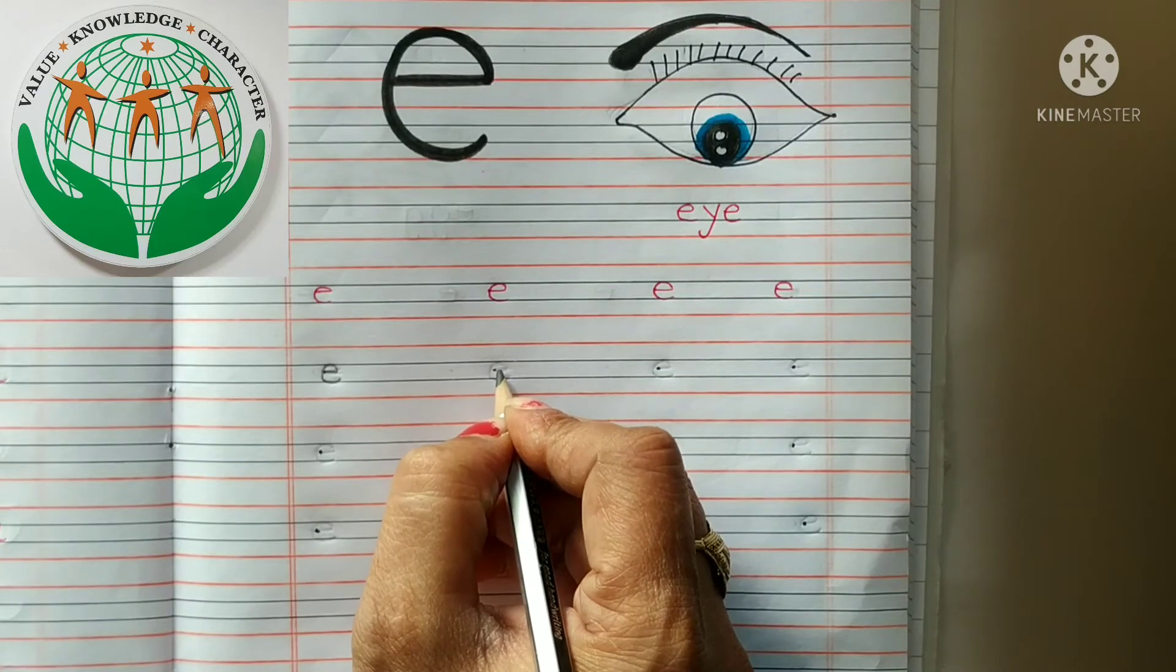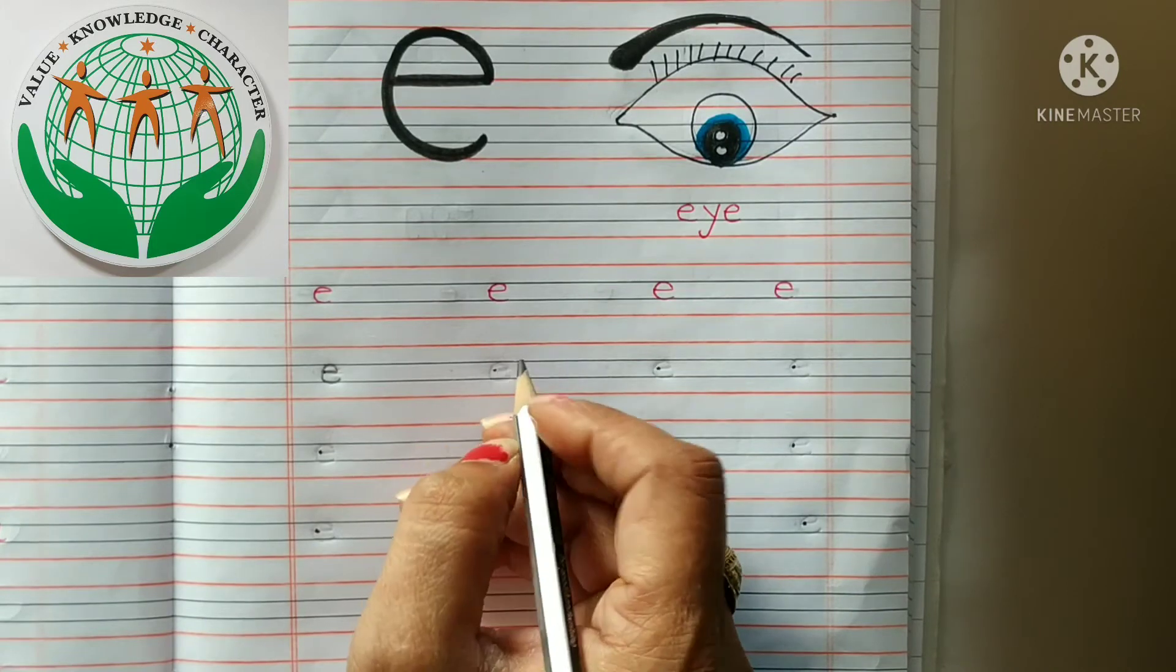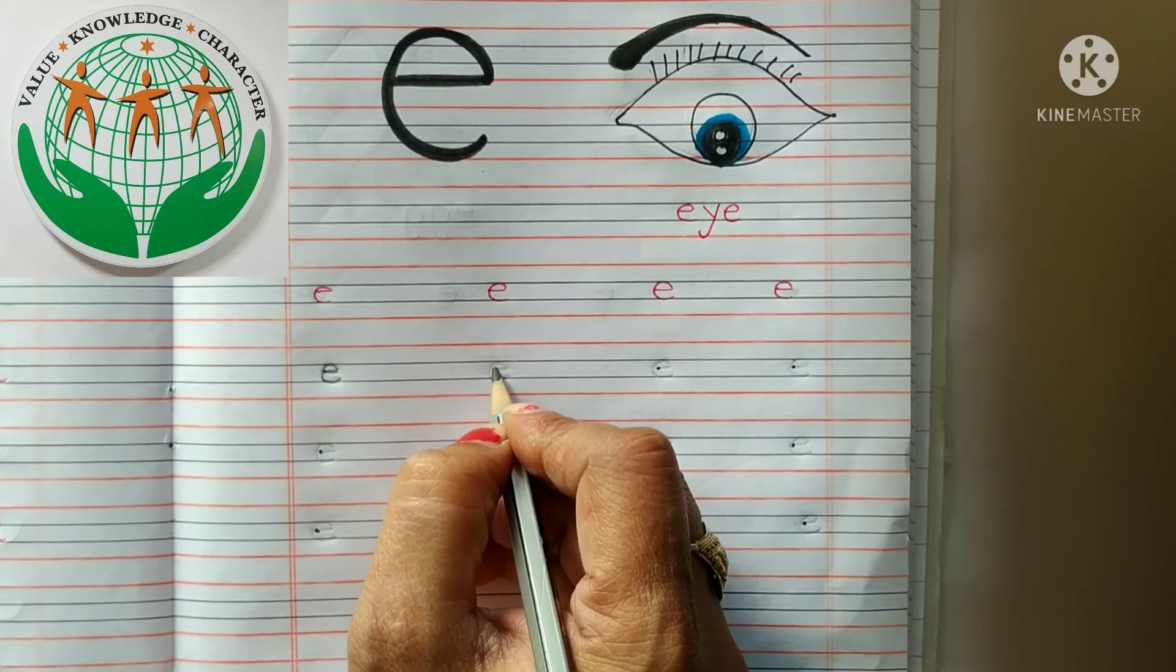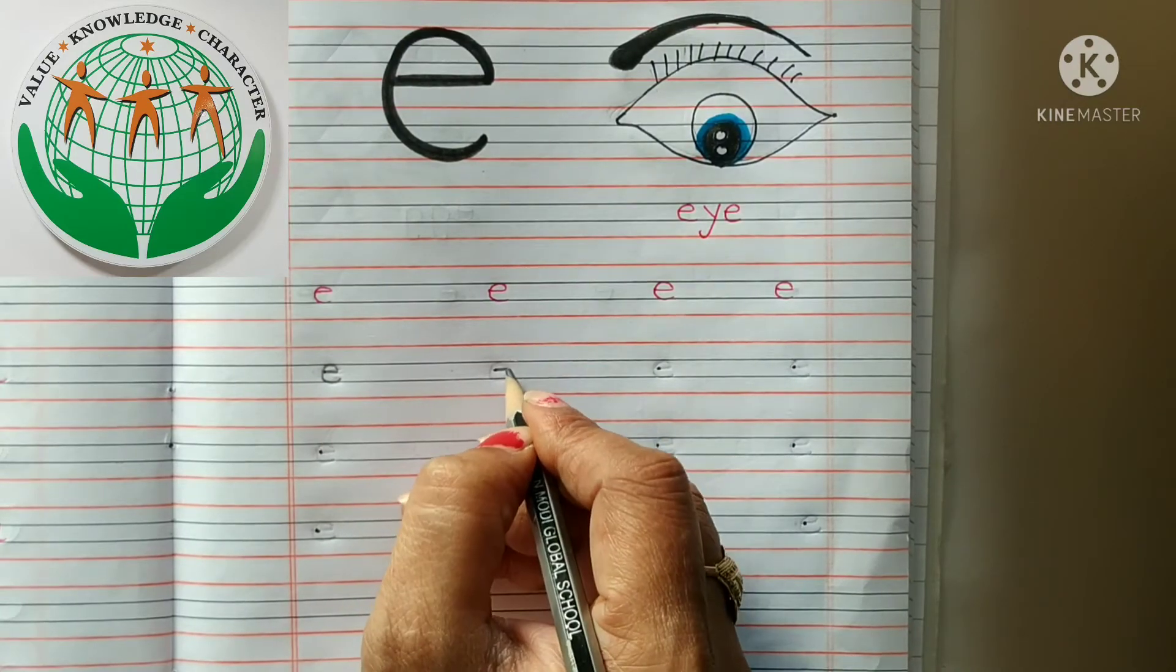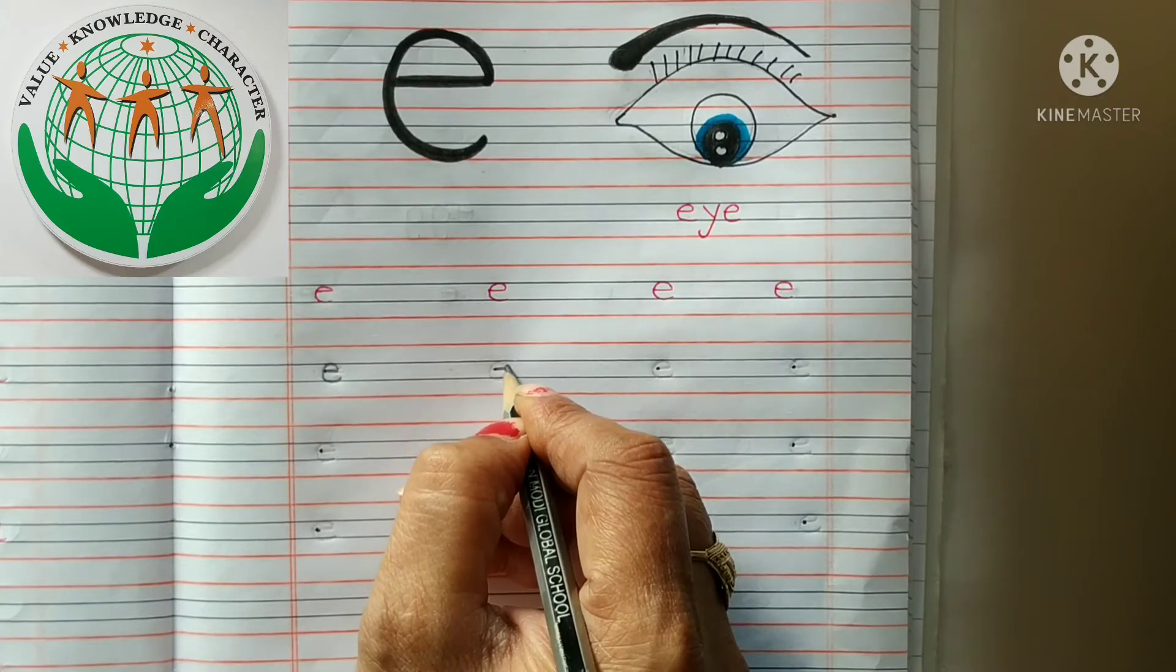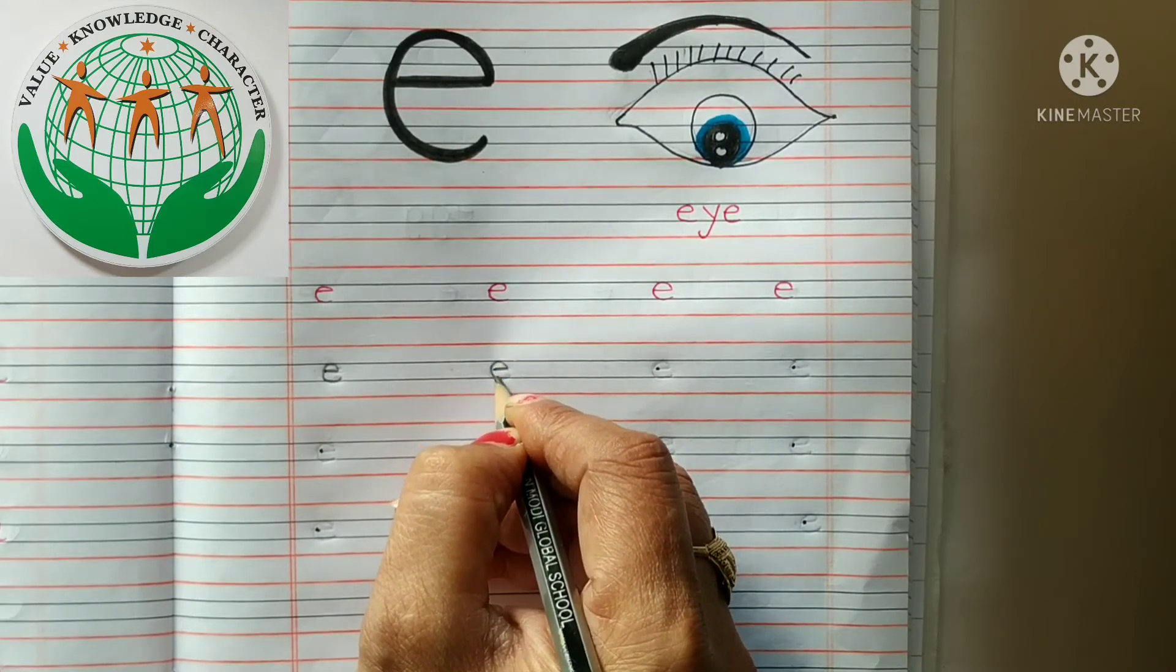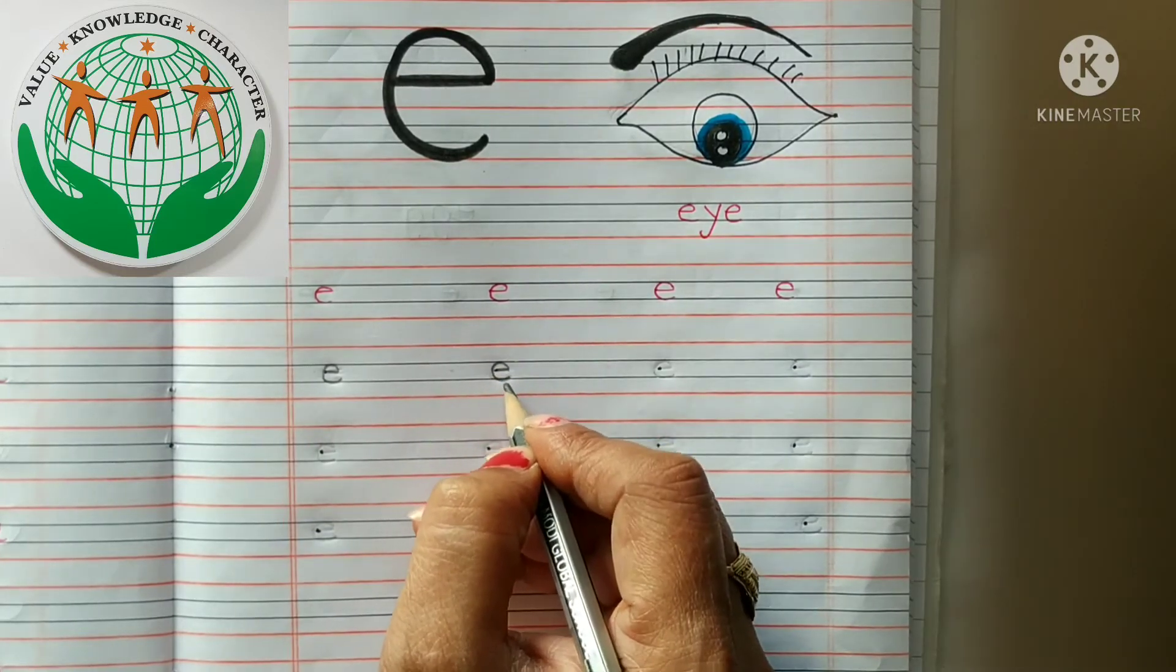Write again. Start from the middle of the line. Haam dono line ke mid se shurru karengi. Aur eek sleeping line draw karengi. Eek small se sleeping line draw karengi. Then we will make a curve. This is small e.